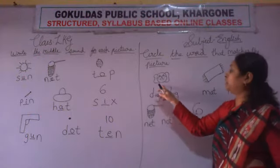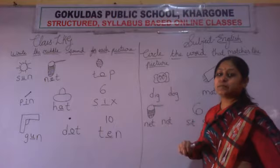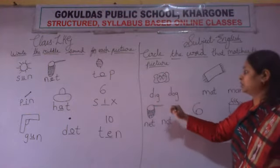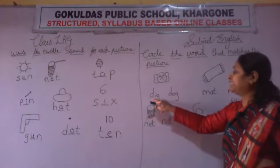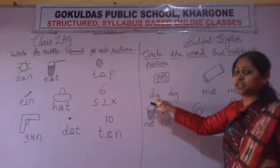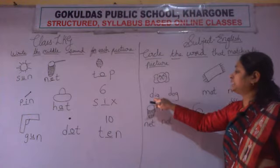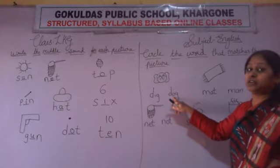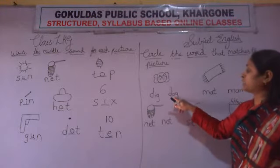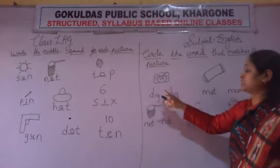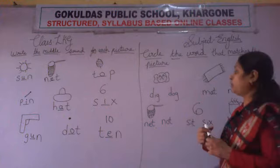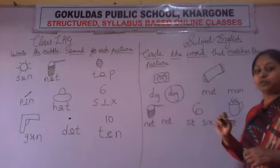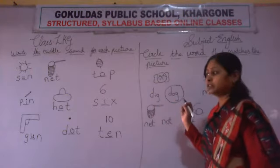What we have to do? We have to circle the correct word that matches the picture. According to the picture, we have to circle the word. Which picture is this? This is the picture of dog. D-O-G — dog. This word matches the picture. So what we will do? We will circle the word.